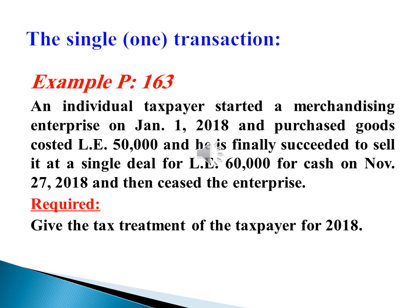Example from the textbook, page 163: An individual taxpayer started a merchandising enterprise on January 1, 2018. Purchases of goods cost 50,000 Egyptian pounds, and he finally succeeded in selling them in a single deal for 60,000 Egyptian pounds cash on November 27, 2018, and then ceased the enterprise. Required: Give the tax treatment of the taxpayer for the year 2018.